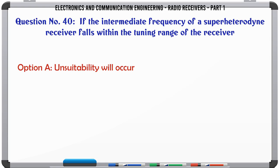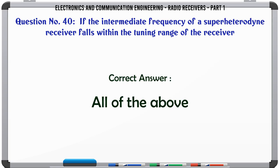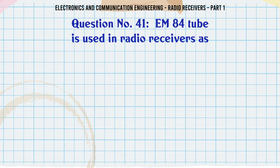If the intermediate frequency of a superheterodyne receiver falls within the tuning range of the receiver: A. Unsuitability will occur. B. Heterodyne whistles will be heard. C. Tuning to the frequency band immediately adjacent to the intermediate frequency will become impossible. D. All of the above. The correct answer is all of the above.